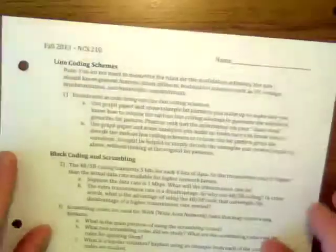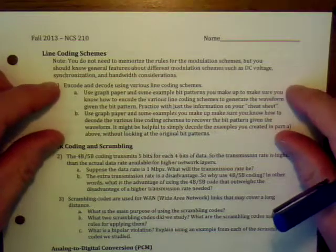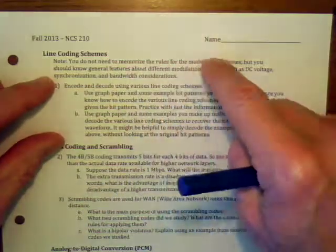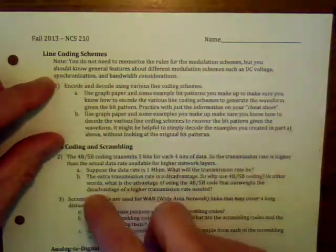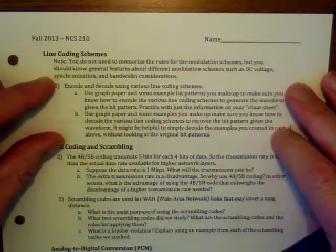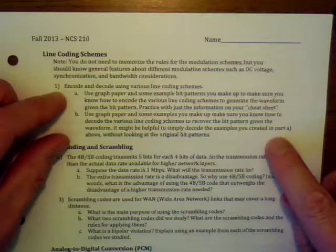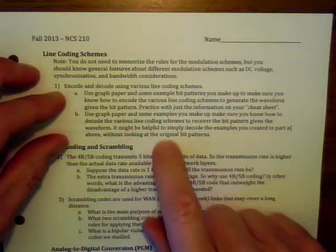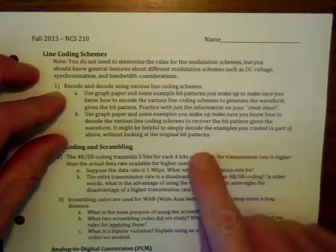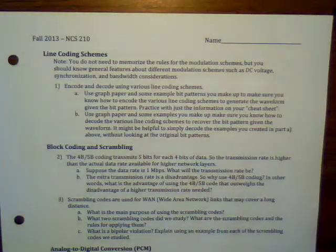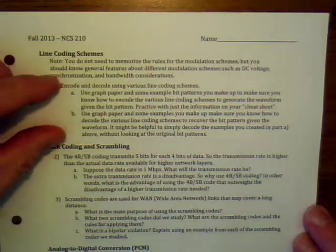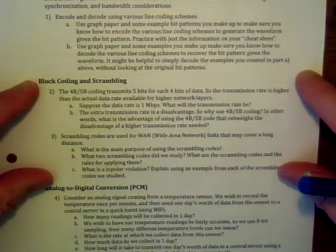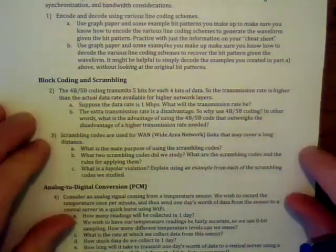For line coding schemes, I recommend getting out a piece of graph paper, writing some zeros and ones across the top, and then encoding those using various schemes. A good way to practice decoding is to create your own encoding picture, then come back to it later after hiding the bit pattern at the top and making sure you can read the bit pattern back off of it. You've had lots of practice with this in the homework.